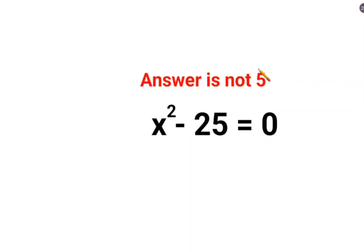Welcome everyone. So yes, a lot of people thought that the answer for this one is 5. Actually, see here we have x² - 25 = 0.